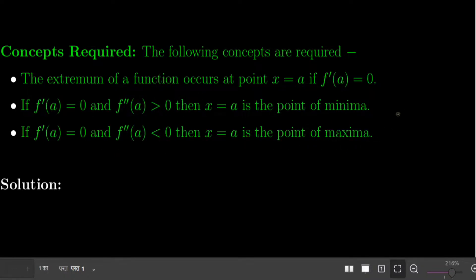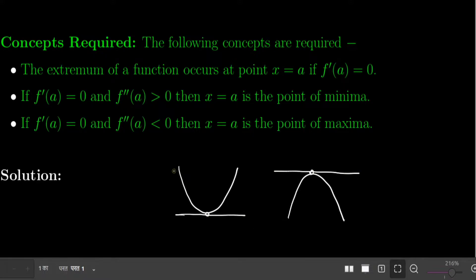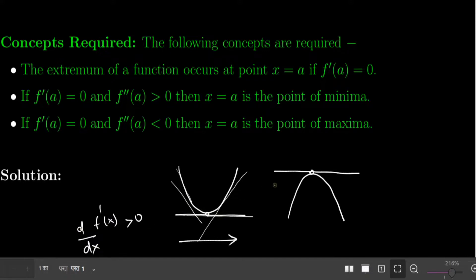If you don't want to memorize these rules, you can derive them by looking at a quadratic graph. For a minimum: the tangent makes an obtuse angle (negative slope) before the minimum, becomes zero at the minimum, then becomes positive after. So the derivative goes from negative to zero to positive — meaning the rate of change of the derivative, i.e., the double derivative, is positive. A positive double derivative confirms a minima.